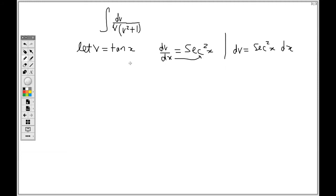So now I can go ahead and substitute the information. So for dv I can replace it with sec squared x times dx, and then for v I can replace it, so I'll have tan x times open brackets tan squared x plus one.